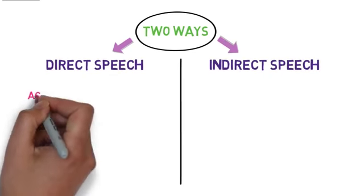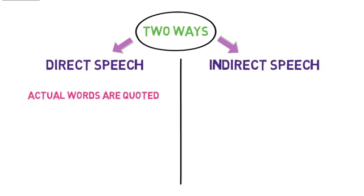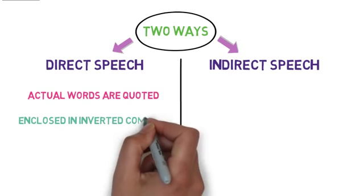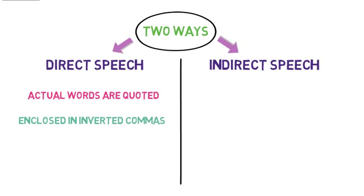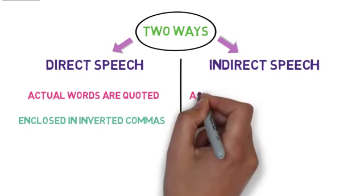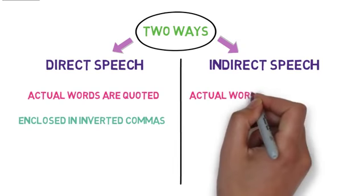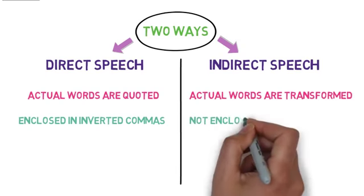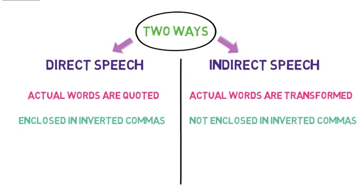In direct speech, the actual words of the speaker are quoted as they are without any change. The exact words of the speaker are enclosed in inverted commas or quotation marks. In indirect speech, the actual words of the speaker are transformed. They are not enclosed in inverted commas; instead, they are said or written in simple language.